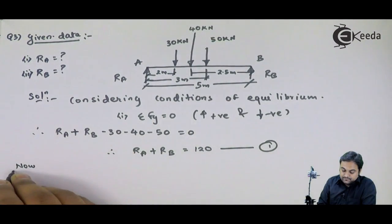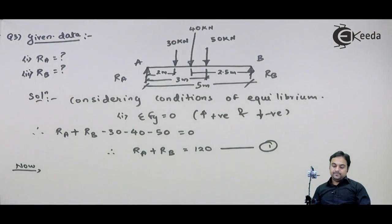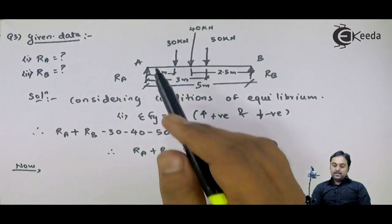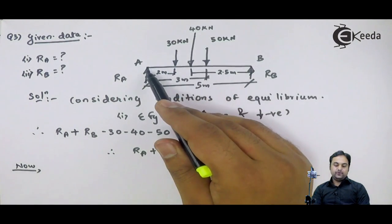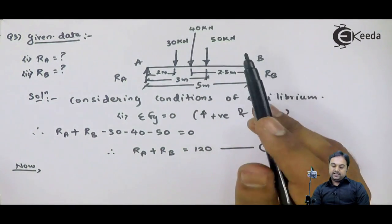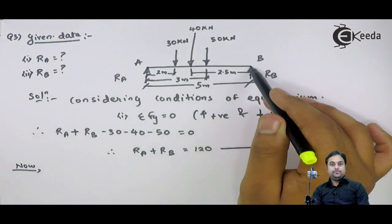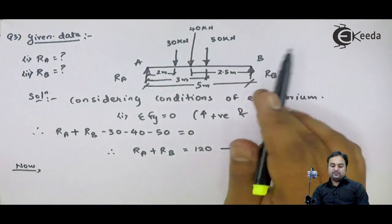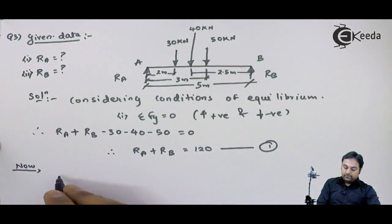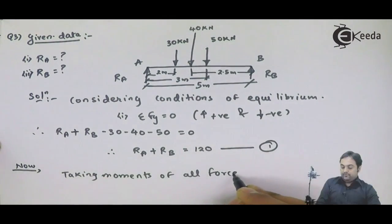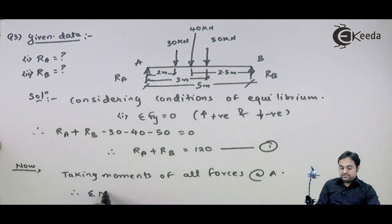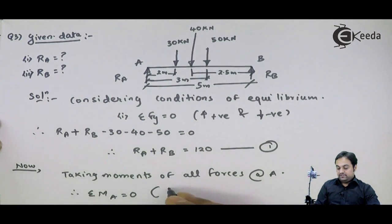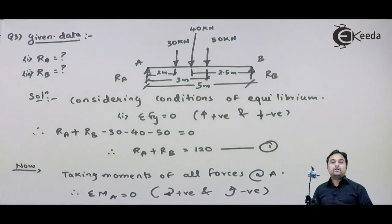Now I will use the second condition of equilibrium in which I will be taking moments of all forces, either at point A or at point B. If I take the moments of all forces at point A, I will be getting RB value first. I will take moments at point A. Taking moments of all forces about A, it means summation of moments about A equals 0, where I will take all clockwise moments positive and all anticlockwise moments negative.